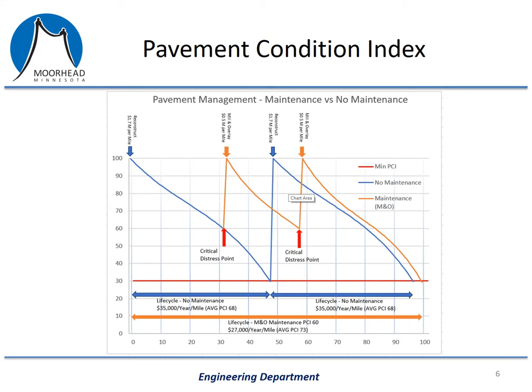The average PCI of a road with no maintenance is 68. The average PCI of a road with mill and overlay maintenance is 73. That just means it's a nicer road and a smoother ride.